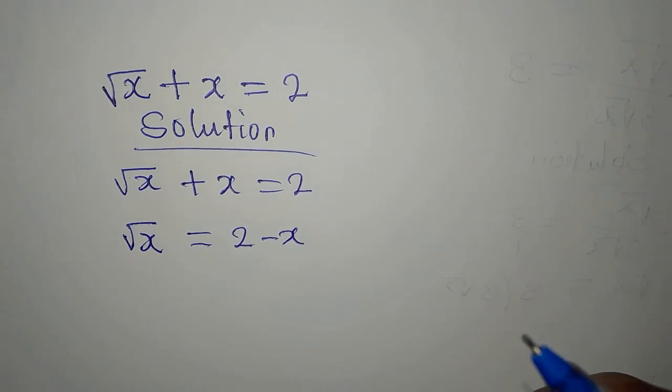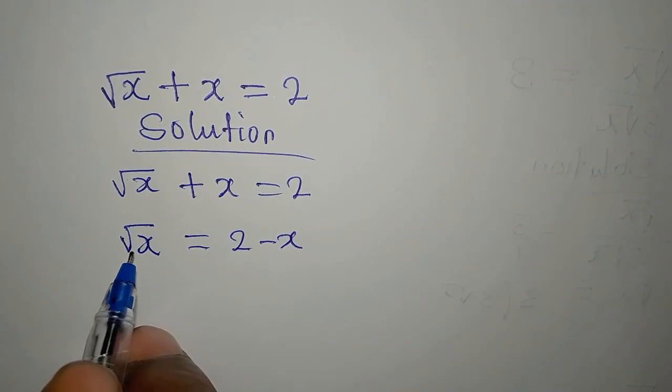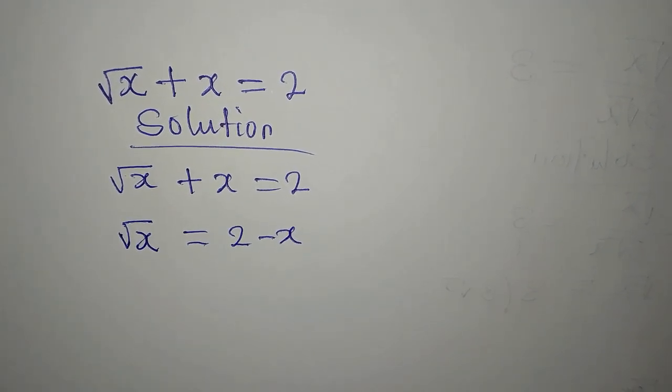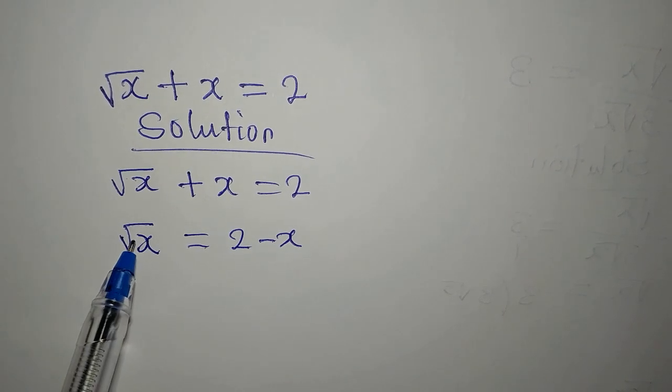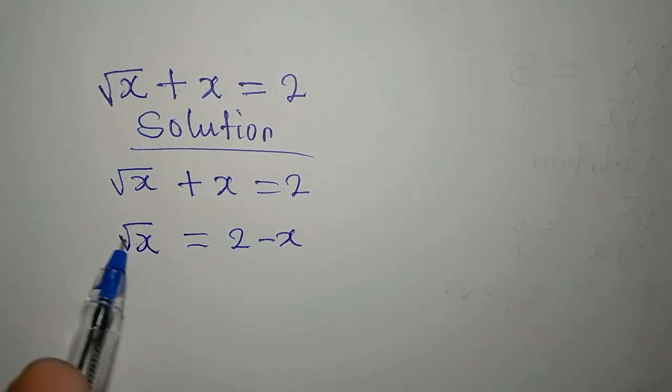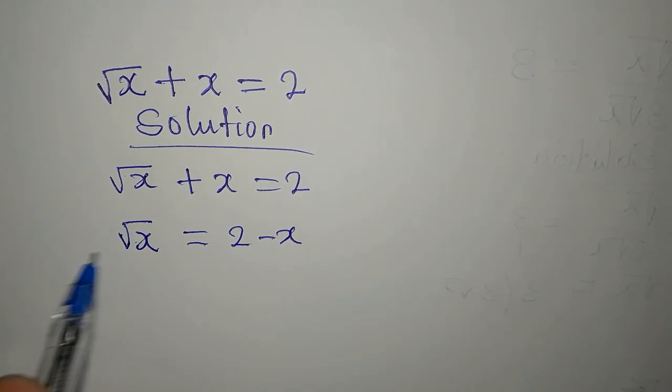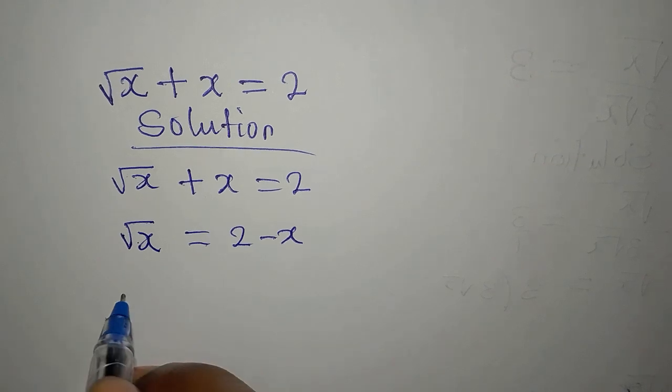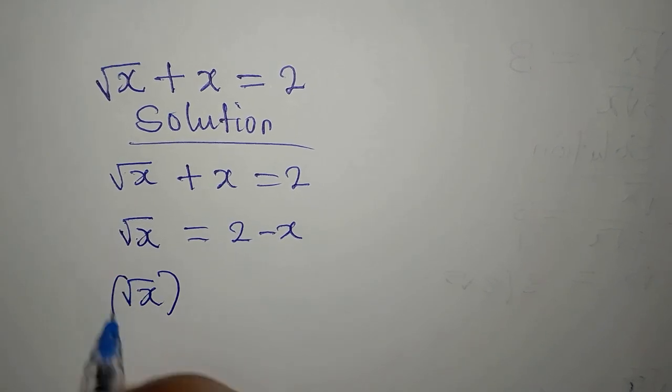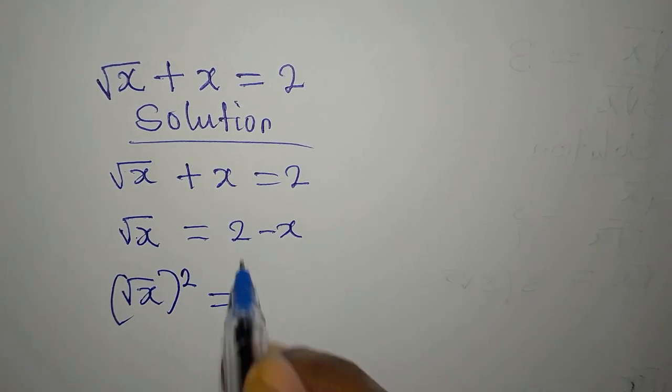I have to make one of the unknowns the subject, but this time around it has to be the one with the square root, so that we can take the square of both sides. That way the square root will be eliminated. So now we have to square both sides.